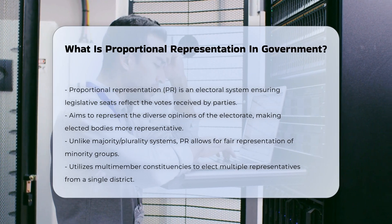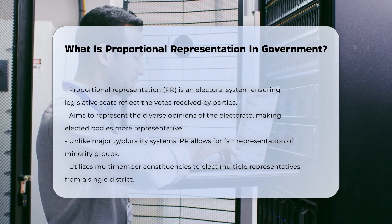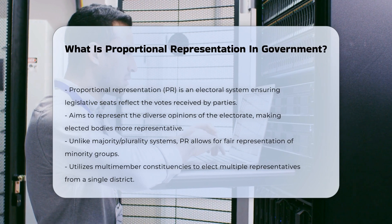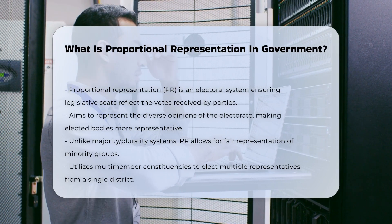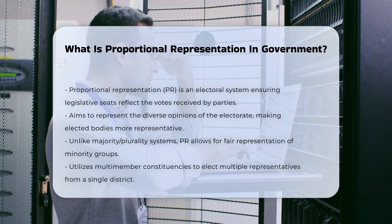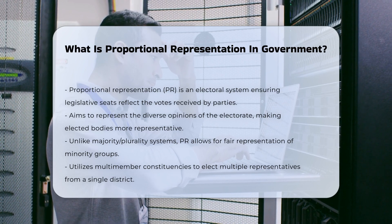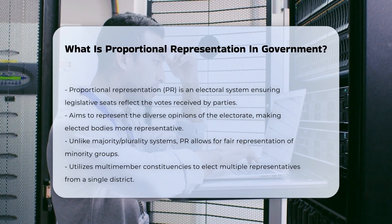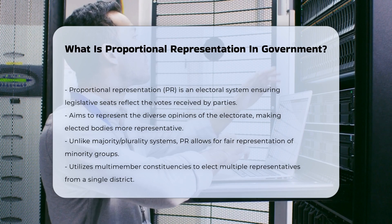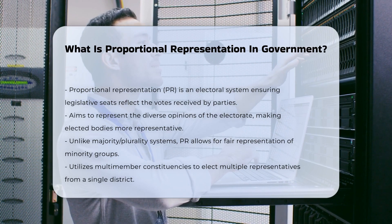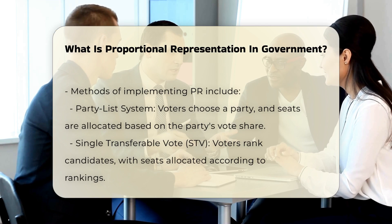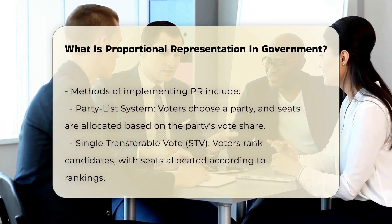In contrast to majority or plurality systems, where a single candidate can win a constituency with less than half of the votes, proportional representation ensures that minority groups also receive a fair share of representation. This is achieved through the use of multi-member constituencies, where multiple representatives are elected from a single district.